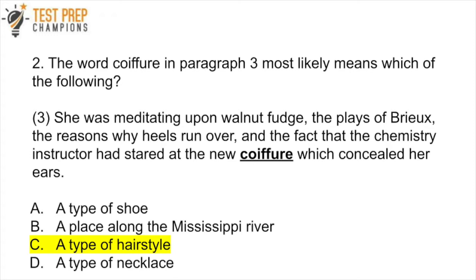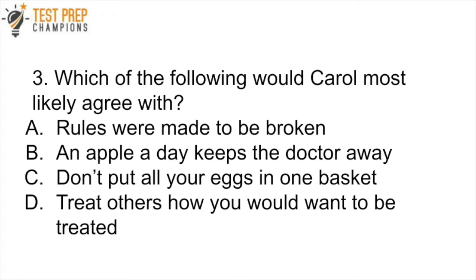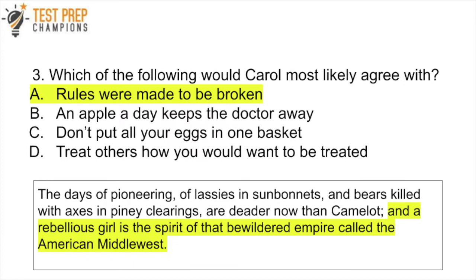Question 3: Which of the following would Carol most likely agree with? A. Rules were made to be broken. B. An apple a day keeps the doctor away. C. Don't put all your eggs in one basket. Or D. Treat others how you would want to be treated. Pause the video, try to figure this out, and then we'll go over it. The answer here is A — rules were made to be broken. The clue comes from the text where it reads: 'A rebellious girl is the spirit of that bewildered empire called the American Middle West.' It's that word 'rebellious' describing Carol, which is why A is most likely what Carol would agree with.